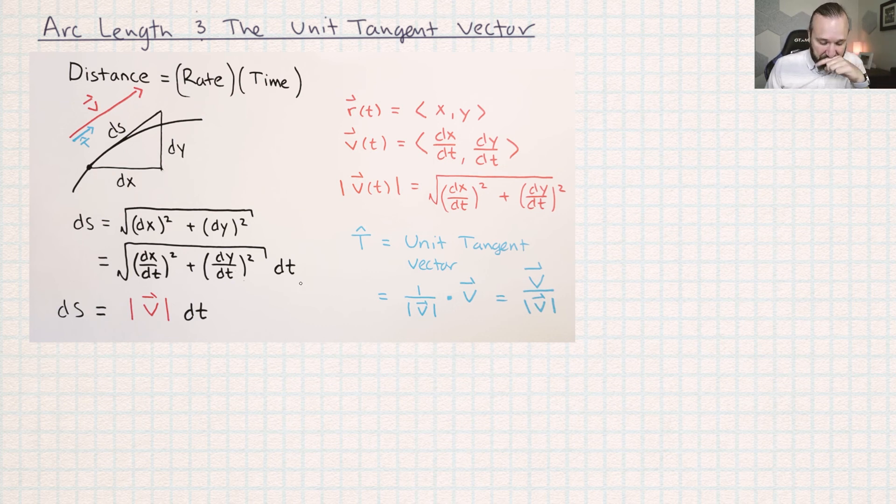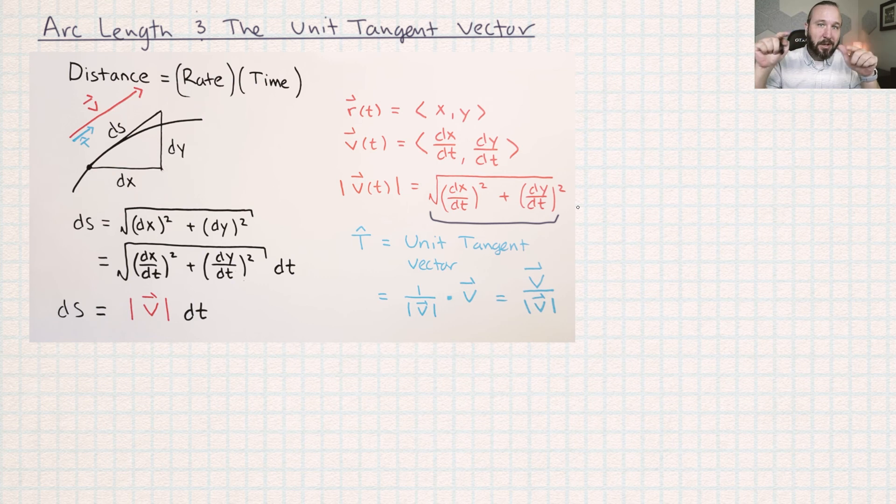And then I'm asking you now just to have the realization that when you calculate the velocity, you take derivatives of the X coordinate and the Y coordinate. And then when you calculate the magnitude of the velocity, you're basically just plugging those derivatives into the Pythagorean theorem. And that's exactly the same thing that's happening in these two pictures.